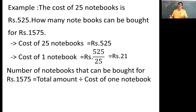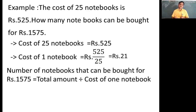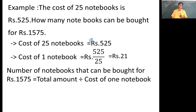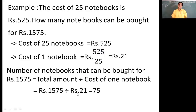Take the example of 10 apples costing 100 rupees — how many apples can you buy for 150 rupees? The cost of one apple is 100 divided by 10, which is 10 rupees, so in 150 rupees you can buy 15 apples. In the same way, we divide the total amount of 1575 by the price of one notebook and we get 75 notebooks.